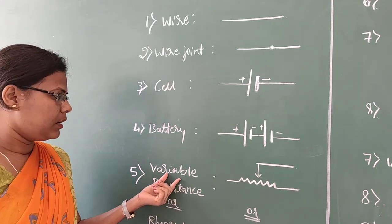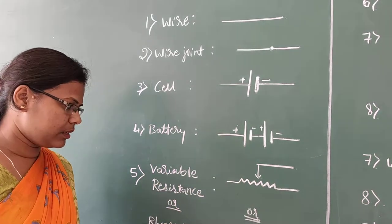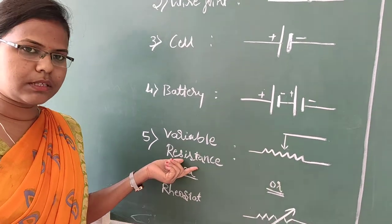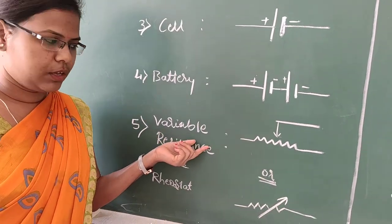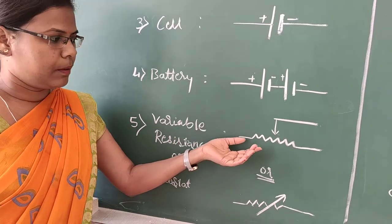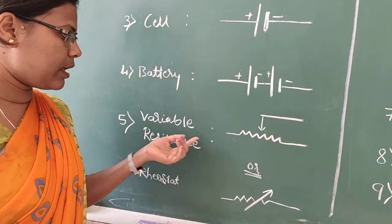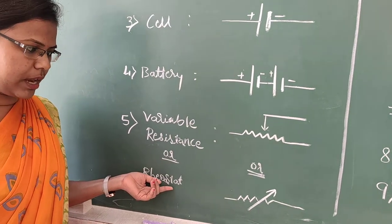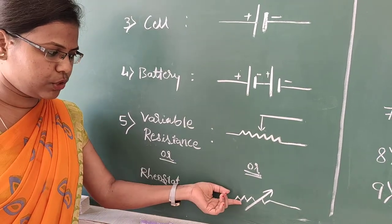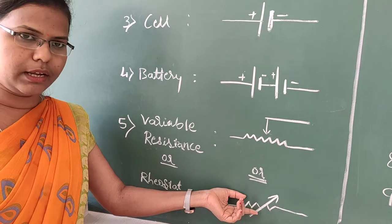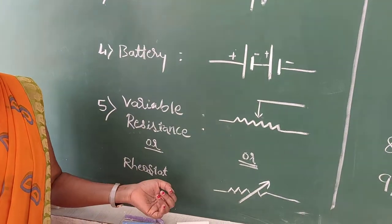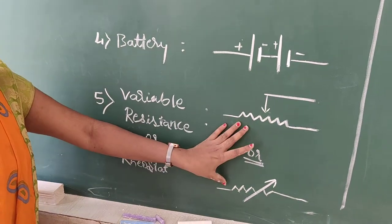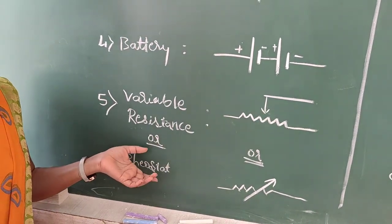This is the symbol for a rheostat or variable resistance. Variable resistance means it is a resistance which can be varied as desired, and it is also called a rheostat. The rheostat is used to change an electric current without changing the voltage.